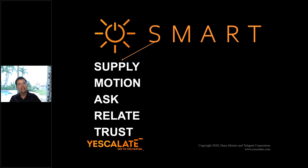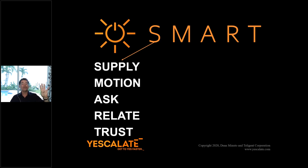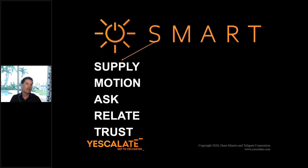There are behaviors that fall into each of these five shortcuts. Supply, which is the most powerful; motion, which is the second most powerful; asking, which is about framing; relationships — which I'll refer to as relate as we move forward in this series — and effective behaviors around creating trust in a relationship.